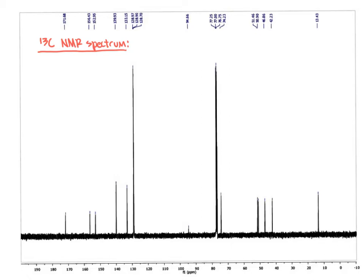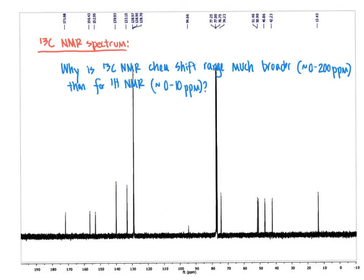So what is the origin of this wider ppm range for carbon versus hydrogens? Why is a carbon-13 NMR chemical shift range so much broader — about 0 to 200 ppm — than a proton NMR chemical shift range of about 0 to 10 ppm? What it comes down to is the extent of shielding or deshielding, because just like with a proton NMR spectrum, when we look further to the left, closer to 200, we're referring to carbons that are deshielded, whereas further to the right, closer to 0 ppm, the more shielded the carbon atoms are.